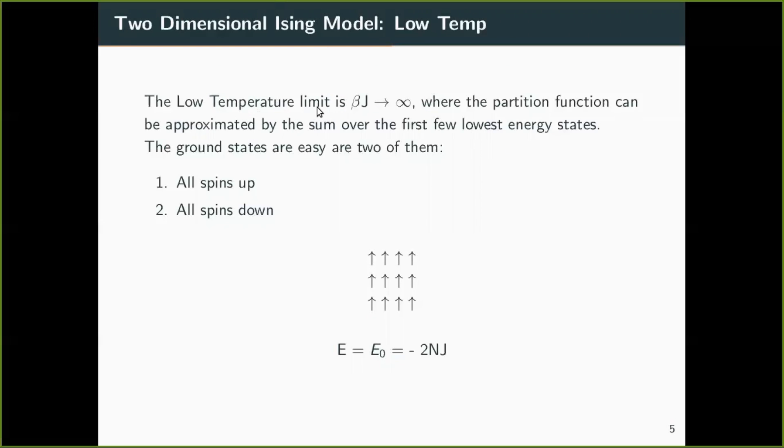In low temperature limit, beta J equal to infinity. The partition function can be approximated by the sum over the first few lowest energy states. So we know that at low temperature, nothing is disordered. All the sites are ordered. There is no randomness.